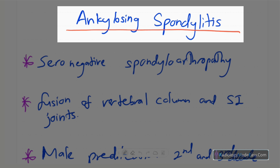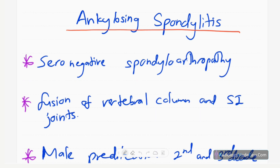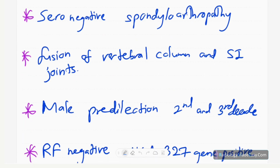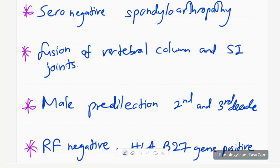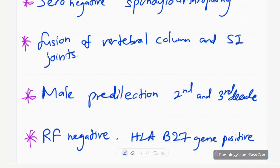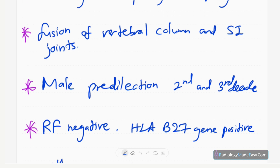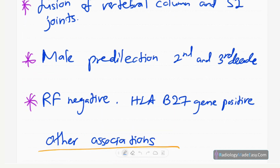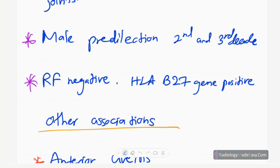Ankylosing spondylitis is a seronegative spondyloarthropathy that mainly affects the axial skeleton rather than the appendicular skeleton. There is fusion or ankylosis of the vertebral column or vertebral bodies and sacroiliac joints. It is common in males and commonly seen in the second and third decades of life.